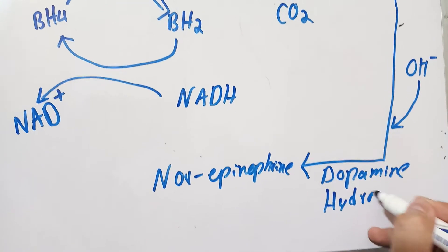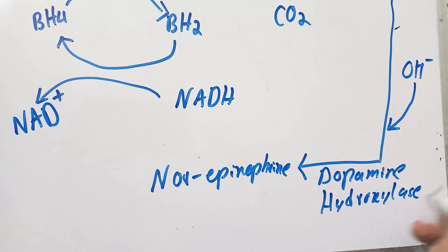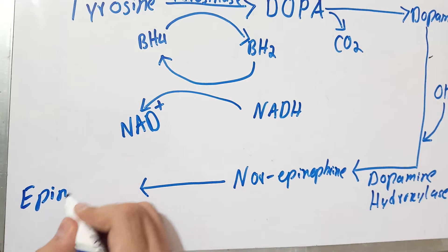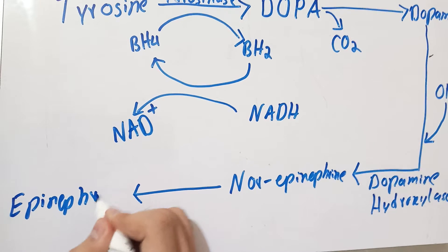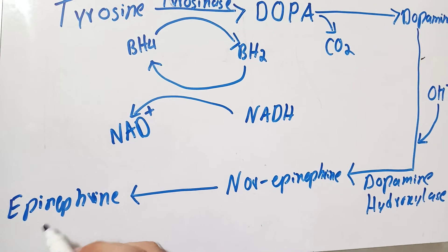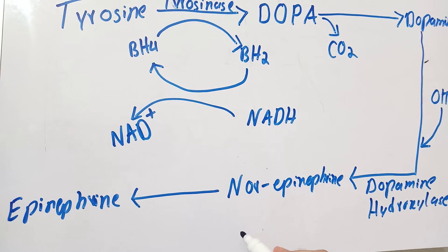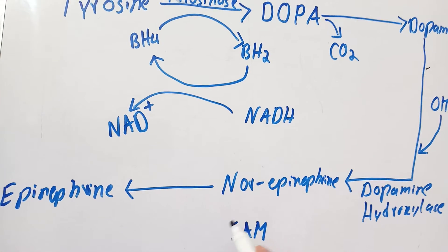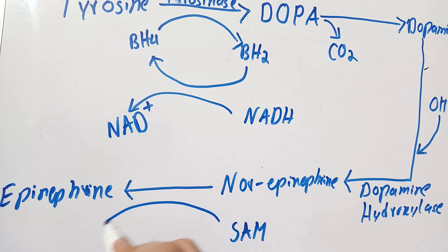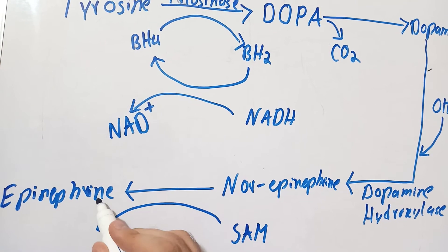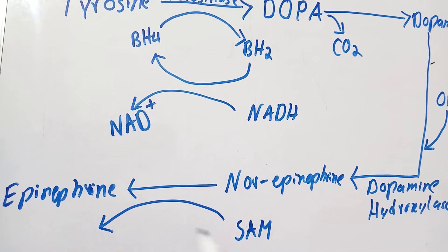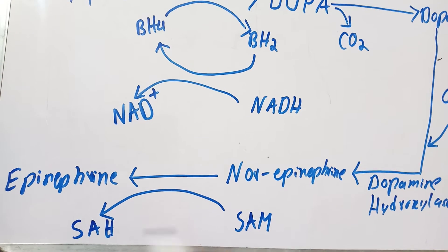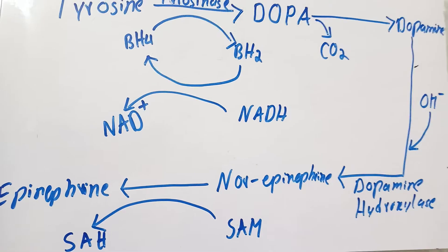Norepinephrine is then converted into epinephrine by the addition of a methyl group. Norepinephrine does not contain a methyl group, but epinephrine contains an additional methyl group. The methyl group is donated by S-adenosylmethionine (SAM), a metabolite of methionine that acts as a methyl group carrier. SAM donates the methyl group to norepinephrine, converting it into epinephrine, and SAM is in turn converted into S-adenosylhomocysteine.